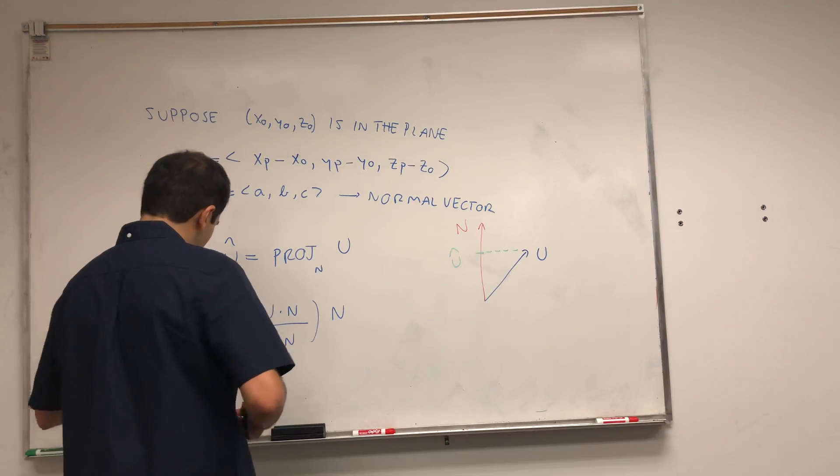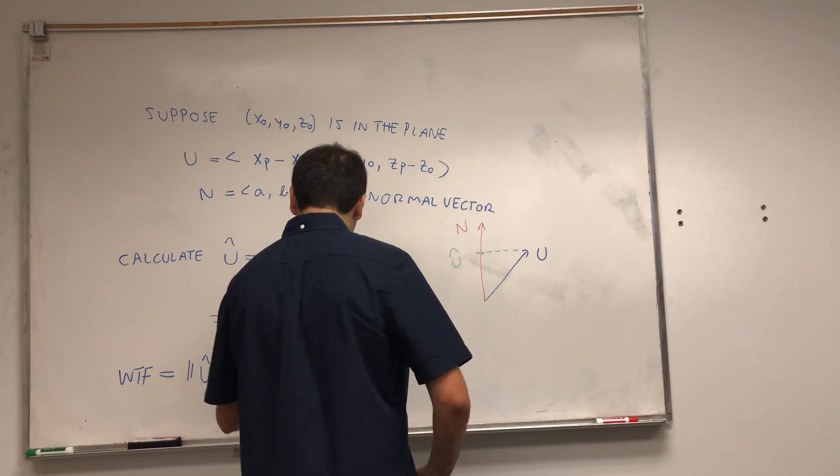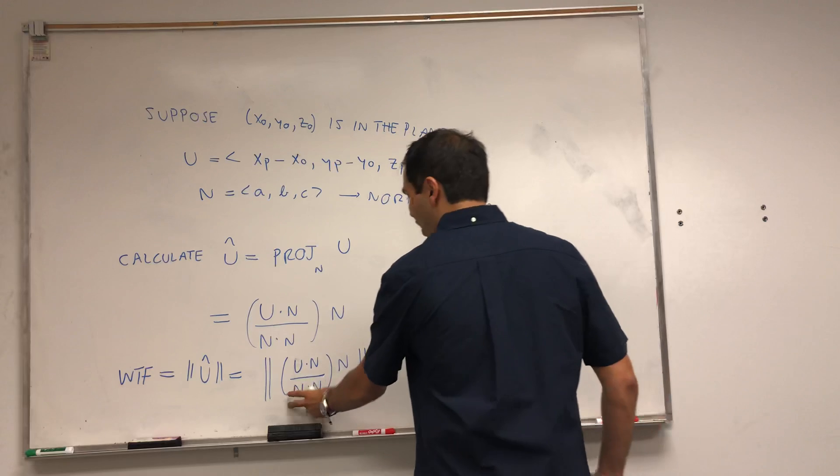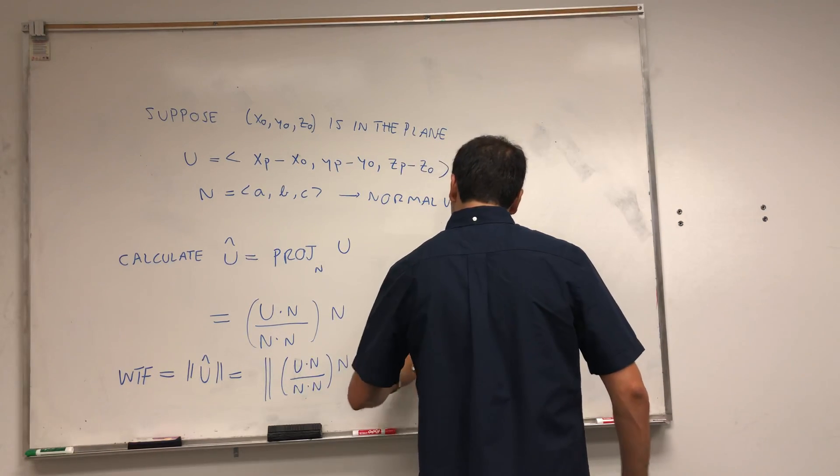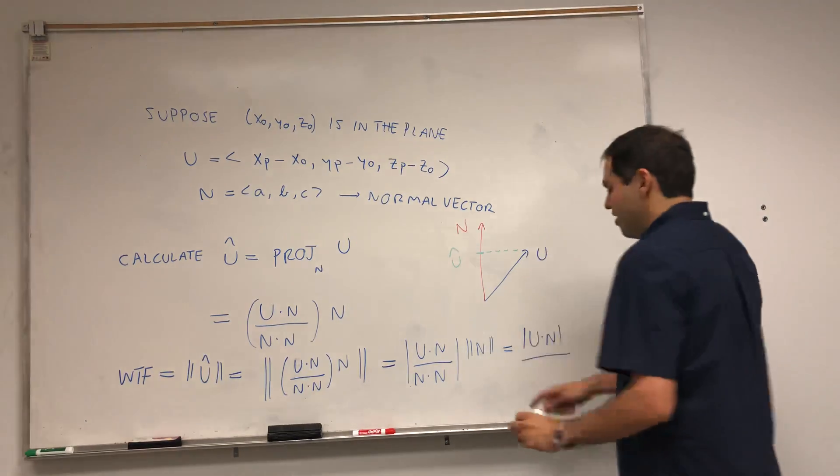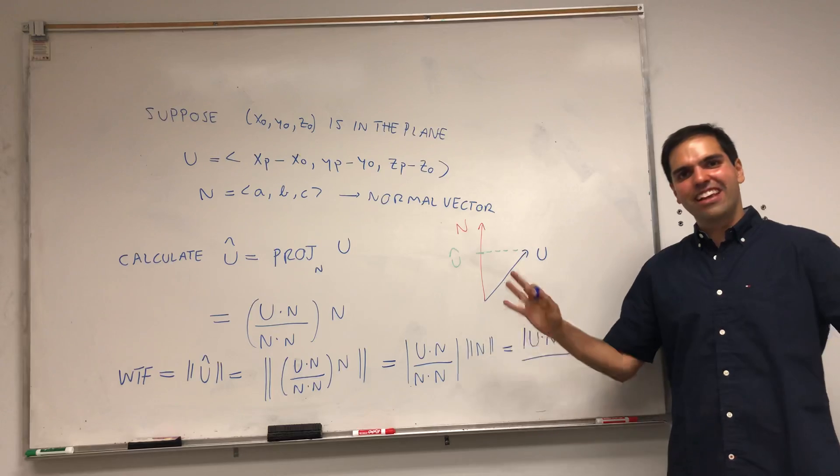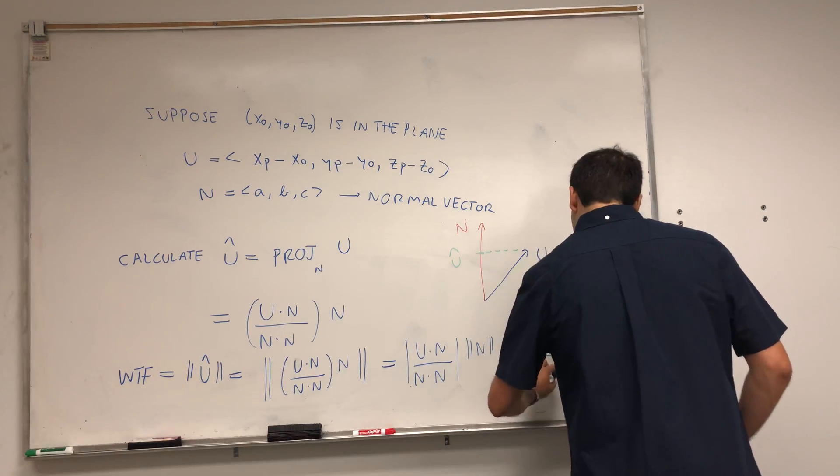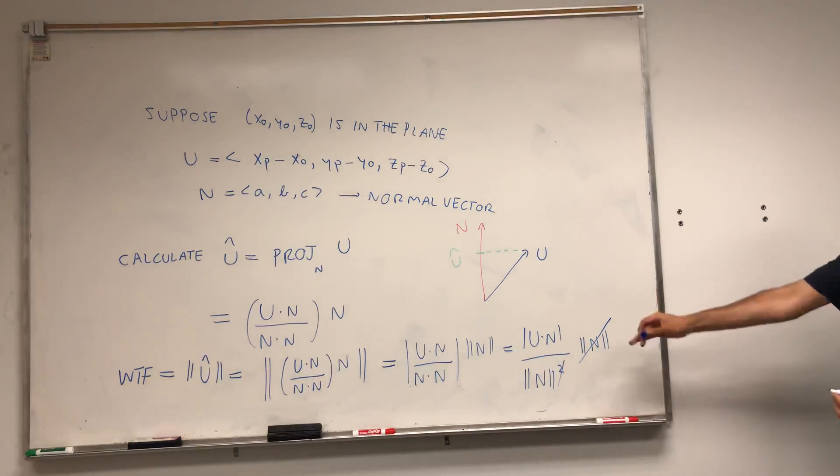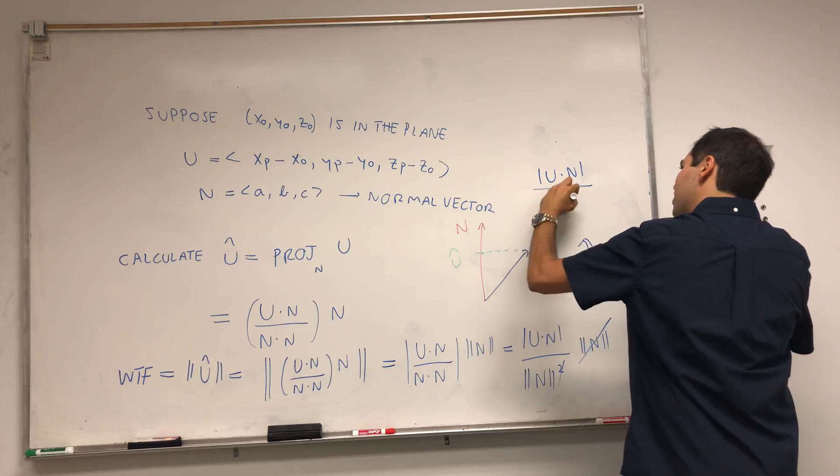Namely, to find our distance, it's the same thing as finding the length of U-hat, which some people call the scalar projection. It's the length of (U · N) / (N · N) times N. One thing about norms is that this constant just comes out, but with absolute values. So it's |U · N| / |N|, since N · N is the same thing as length squared. The length of N is just length of N. There's this nice simplification: U · N over length of N.